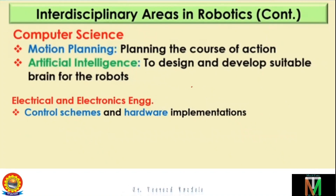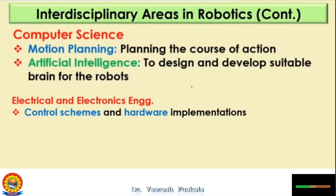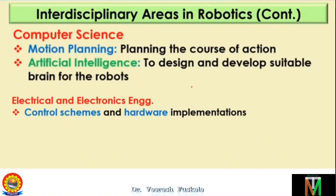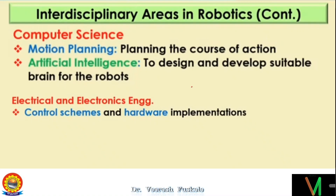The next very important module is computer science. Computer science nowadays plays a very important role because we want to make our robot intelligent — we need to do programming and make decisions. In computer science, we deal with motion planning, which means planning the course of action for the motion of the robot arm or end effector. That motion planning is done using motion planning algorithms. Yesterday we also saw the video of Amazon robots — 3,000 robots running parallelly on the warehouse floor with no collision. All this motion planning requires standard algorithms: some are old mathematical algorithms and today's latest software-based algorithms are also there.